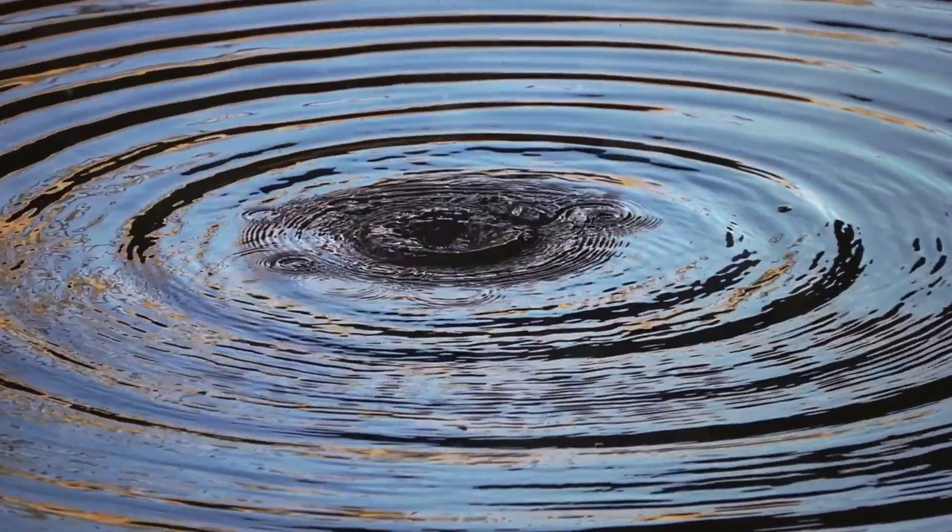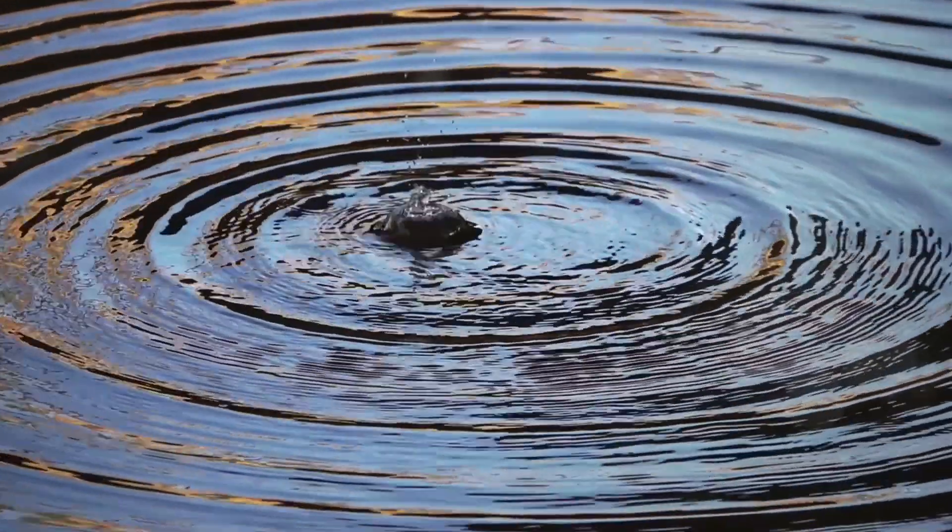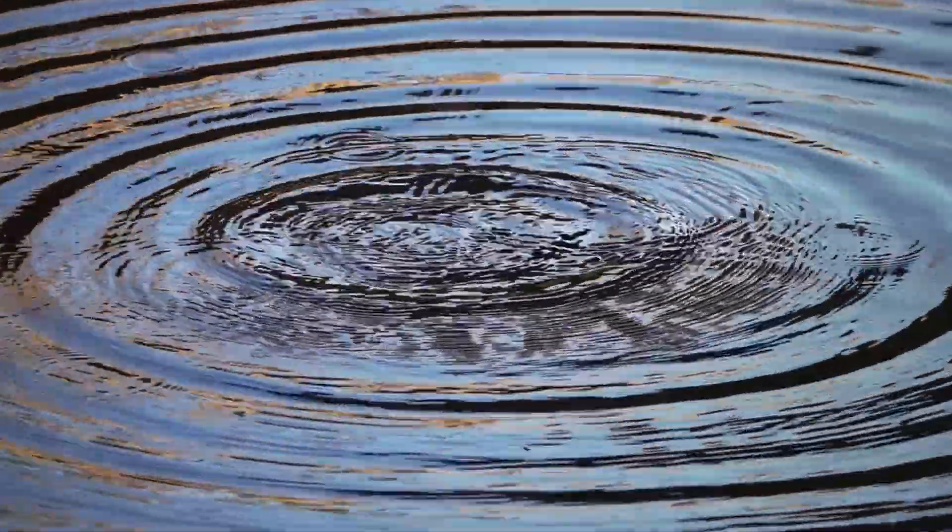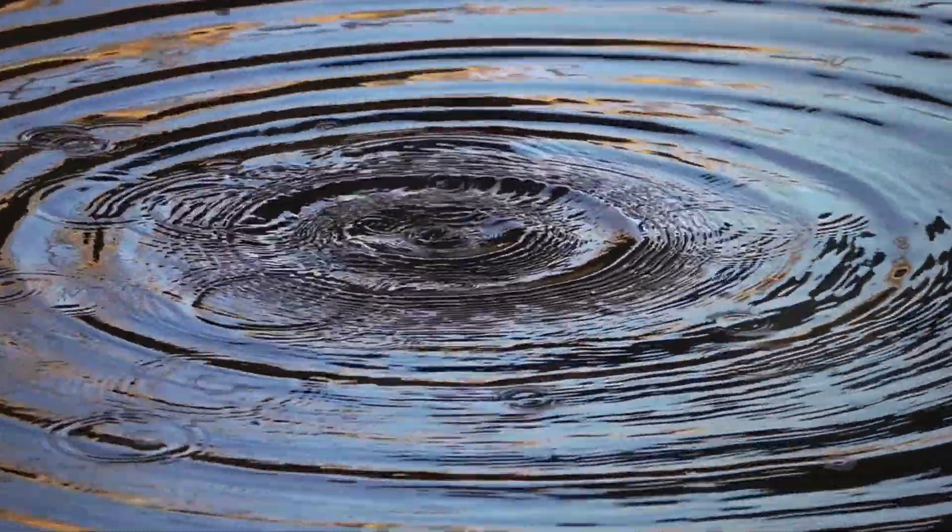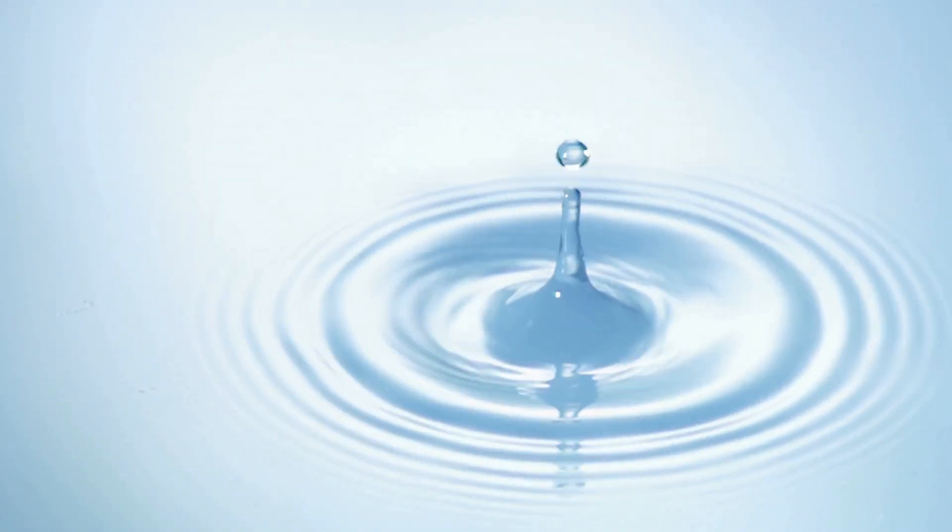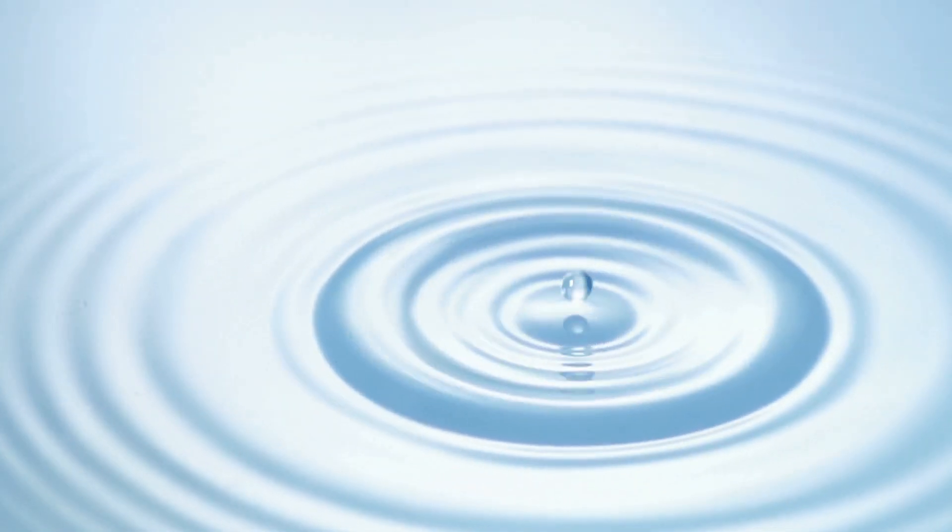Remarkably, bouncing droplets can recreate this iconic experiment. When a droplet encounters a double-slit arrangement, it doesn't simply pass through one slit or the other. Instead, it creates an interference pattern on the fluid's surface, as if it were a wave passing through both slits simultaneously. This striking demonstration highlights the wave-like nature of the droplet wave system.